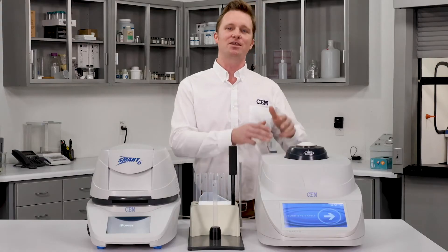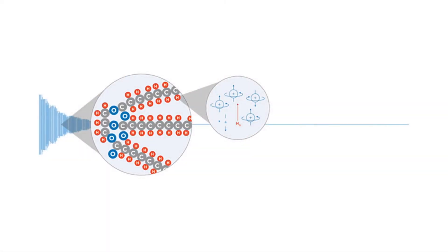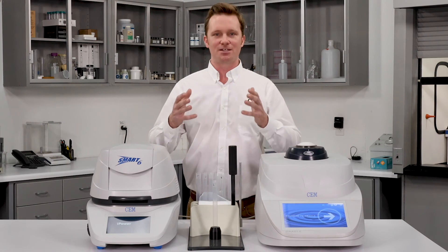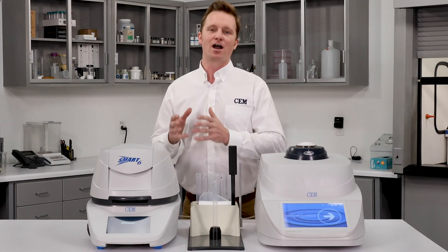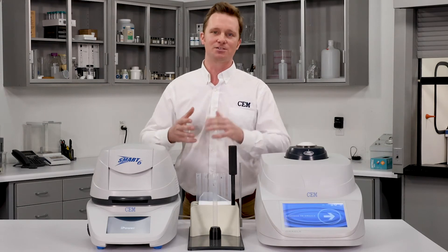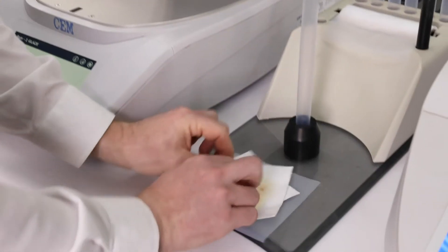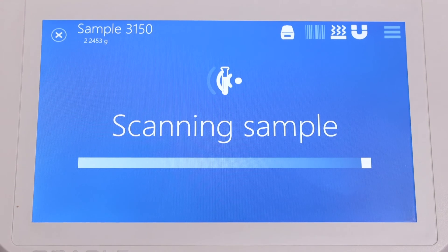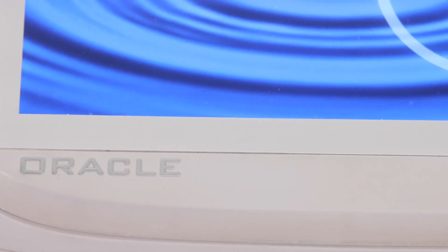Regarding sample texture: FTIR and NIR are susceptible to changes in color, consistency, and texture because they're optical measurements — the way the sample looks can affect results. The Oracle looks at the molecular structure of the sample and is not affected by changes in color, texture, or consistency. On sample type, FTIR and NIR are specific to liquids and solids respectively, while the Oracle can handle liquids, solids, creams, and everything in between.